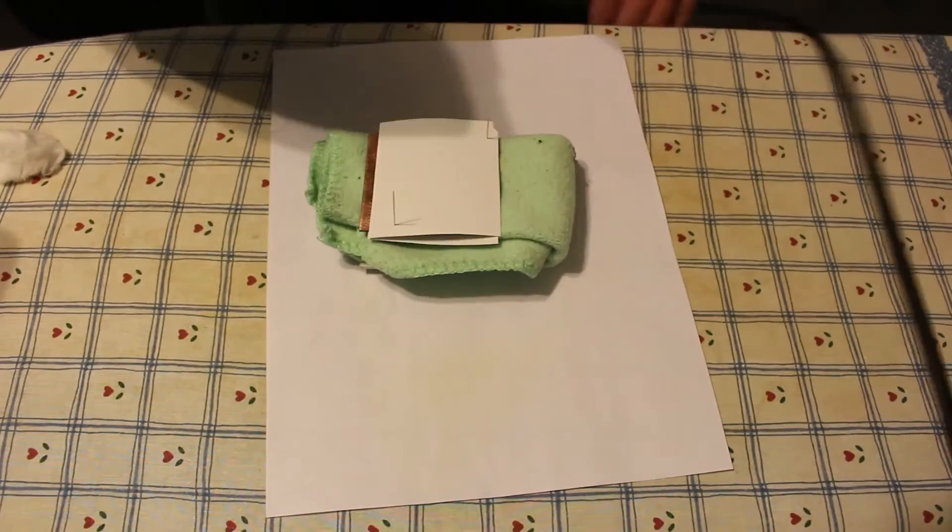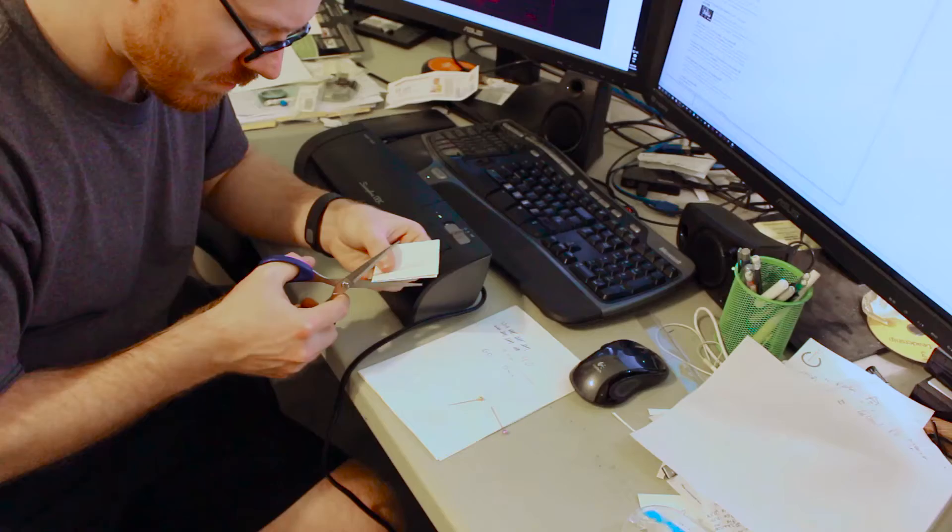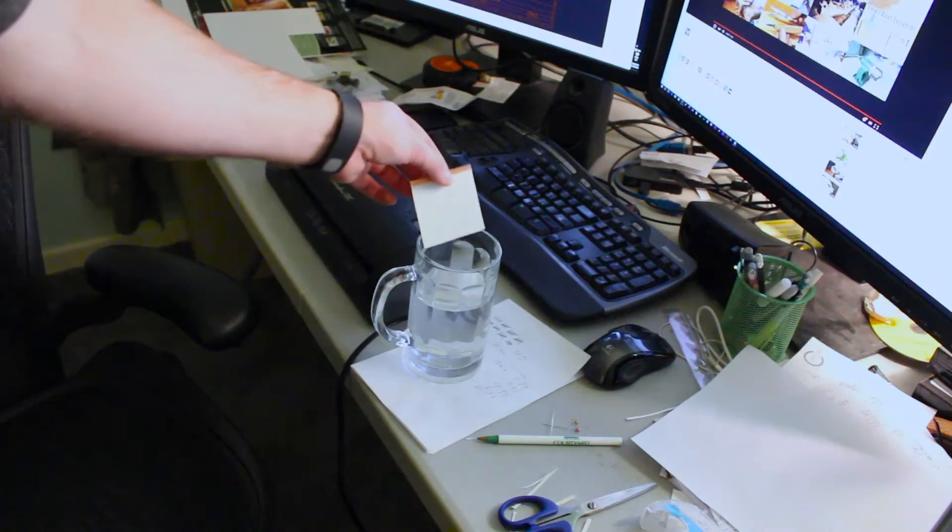First I use an iron, and that causes the toner to melt just enough to keep the paper sticking to the copper. Then I trim up the edges and run it through a laminator like 60 times.